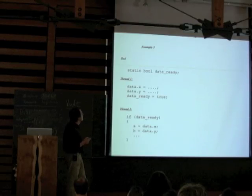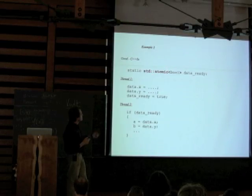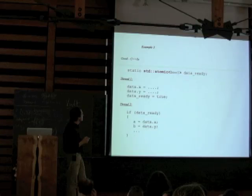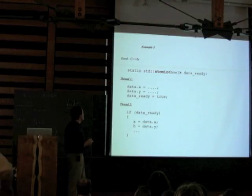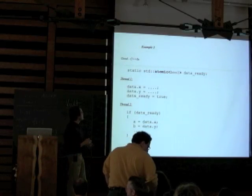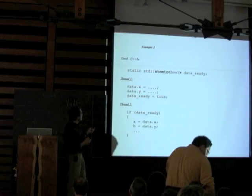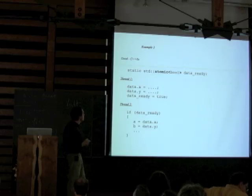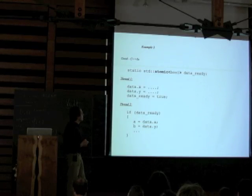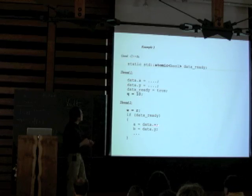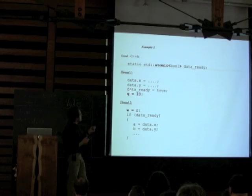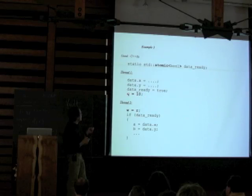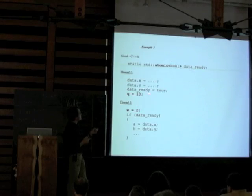Given those problems, we realize our original code isn't very good. The fix: first, make the boolean an atomic. Then, using atomic bool with sequential consistency, these things now happen in the order you expect. If you see the flag as true, you know everything happened in the right order. However, if we're trying to do lock-free programming for speed, there's a subtlety: the compiler and CPU have done extra work to make sure things happen in order, which tends to slow things down.